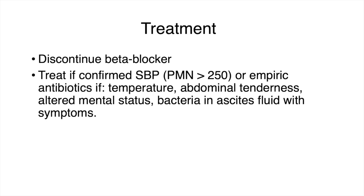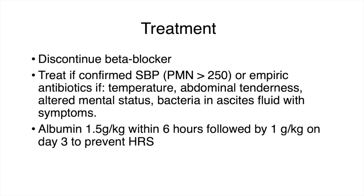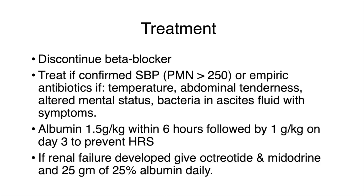If we have confirmed SBP with polymorphonuclear cells more than 250, we give antibiotics. If we don't have clear evidence of SBP but have high suspicion based on temperature, abdominal tenderness, altered mental status, and bacteria in the ascitic fluid, we give empiric antibiotic therapy. We may also need to give albumin 1.5 g/kg within six hours of diagnosis, followed by 1 g/kg on day three to prevent hepatorenal syndrome. If renal failure develops, we treat it as hepatorenal syndrome with octreotide, midodrine, and albumin. Please refer to our hepatorenal syndrome lecture for further details.